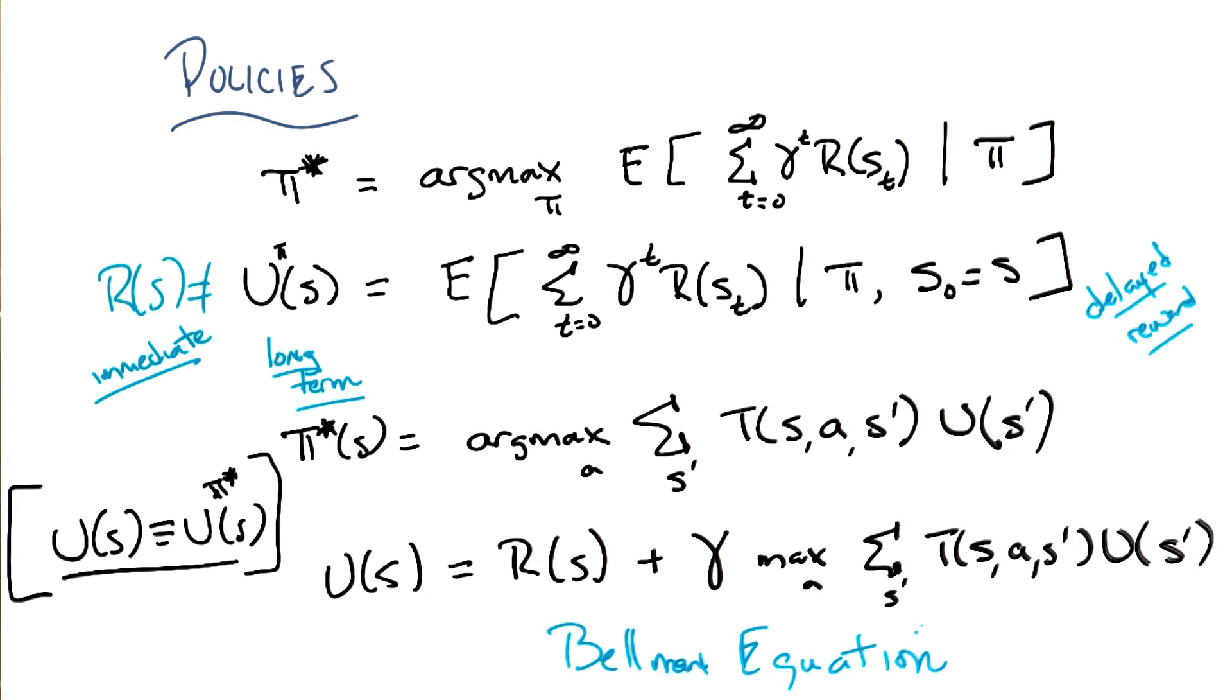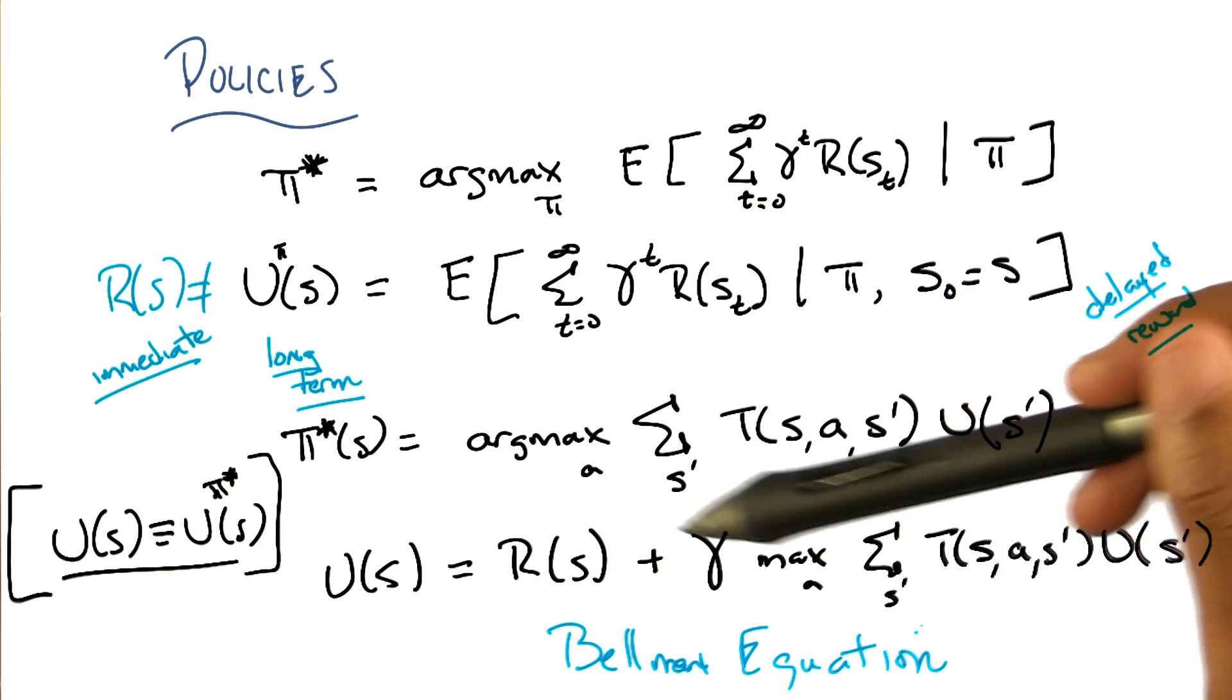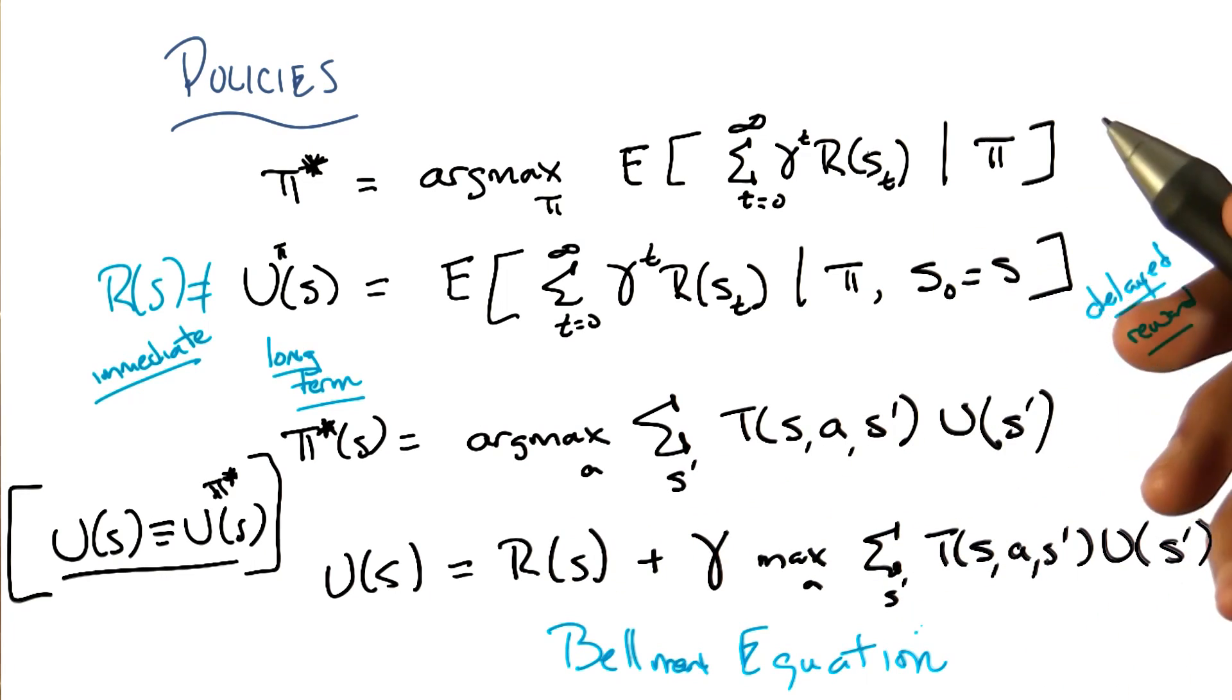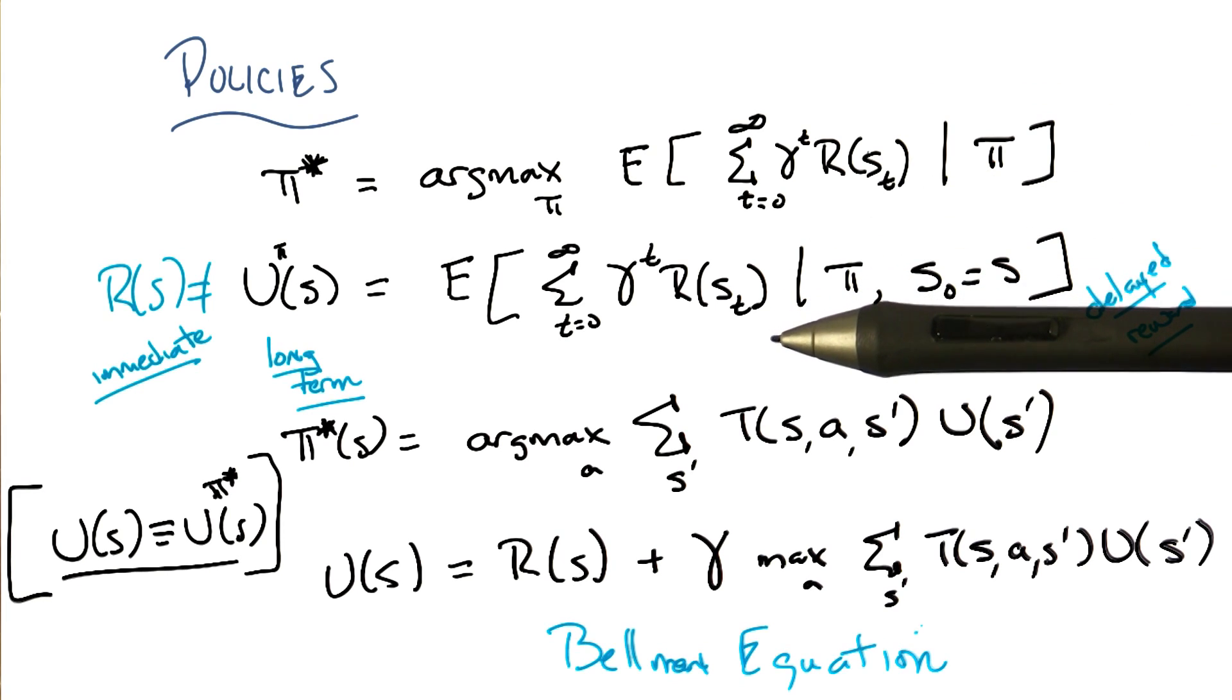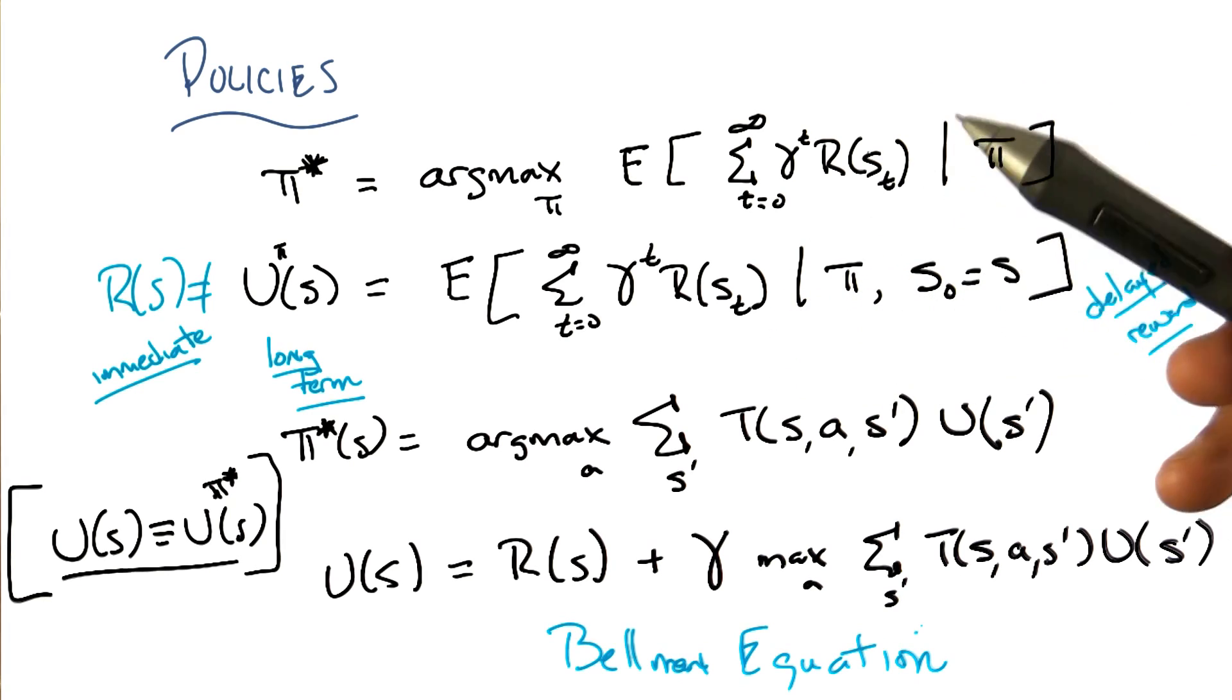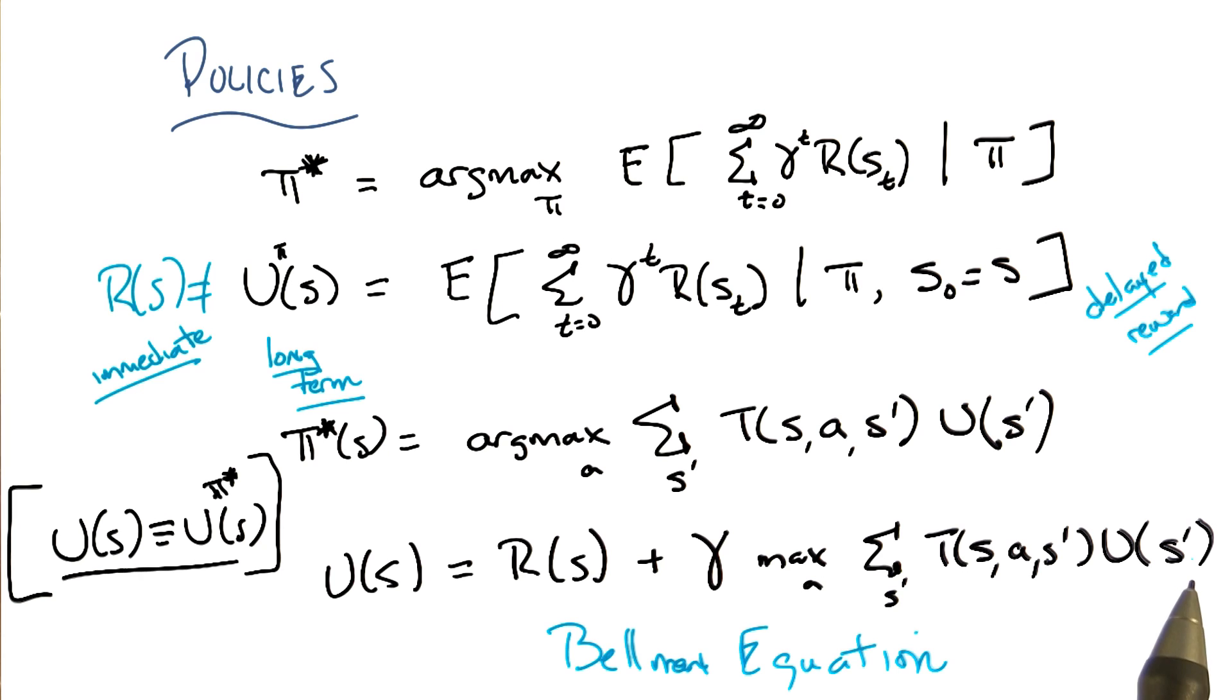This equation was invented by a guy named Bellman, and it turns out to be in some sense the key equation for solving MDPs and reinforcement learning. Wow. And it's actually even more subtle than it looks. But basically, this is the fundamental recursive equation that defines the true value of being in some particular state. And it accounts for everything that we care about in the MDP.